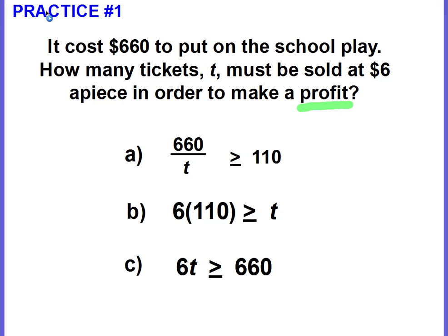Okay, let's see how you did. Did you choose B? 6 times T is greater than or equal to 660.